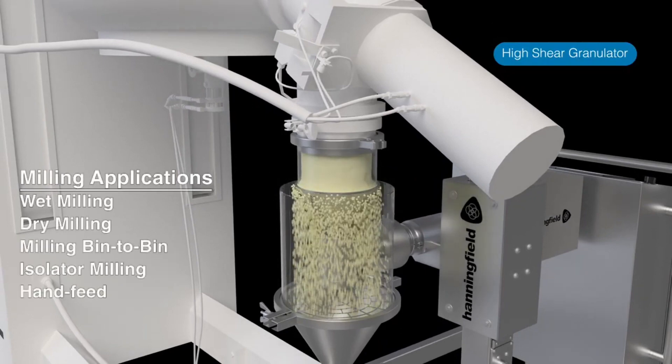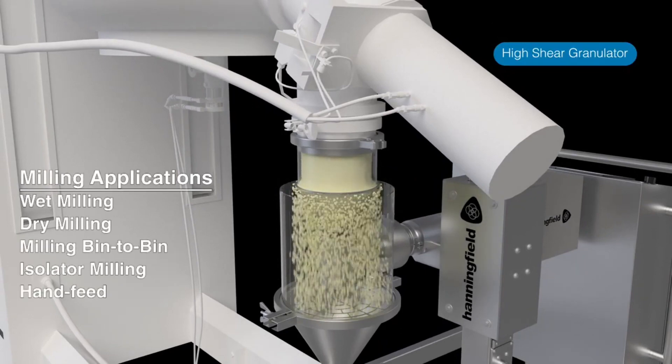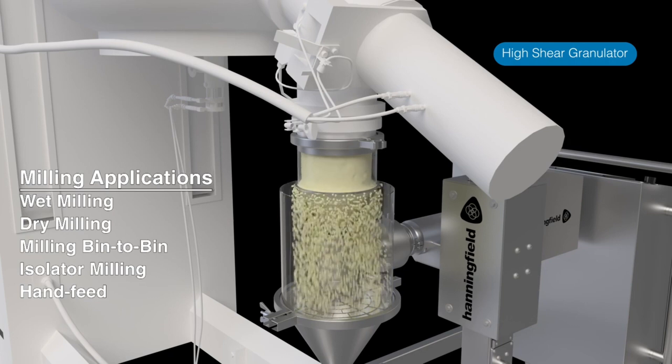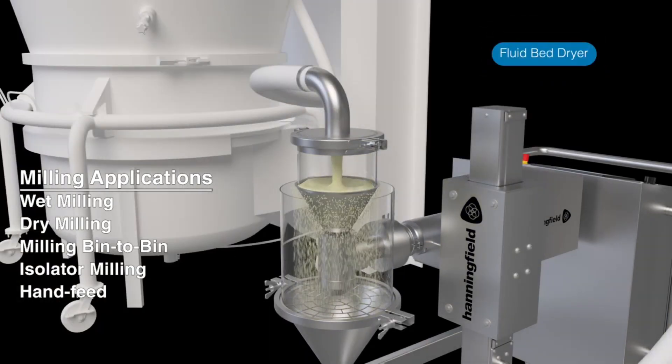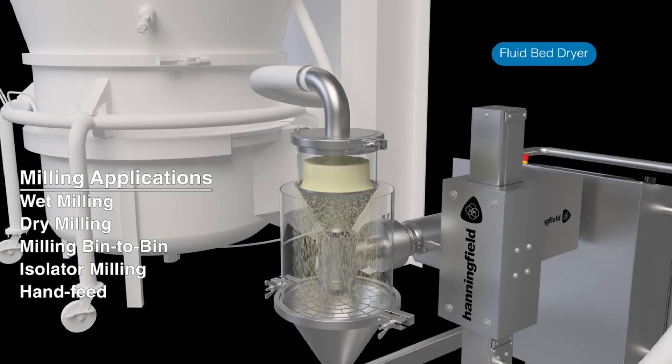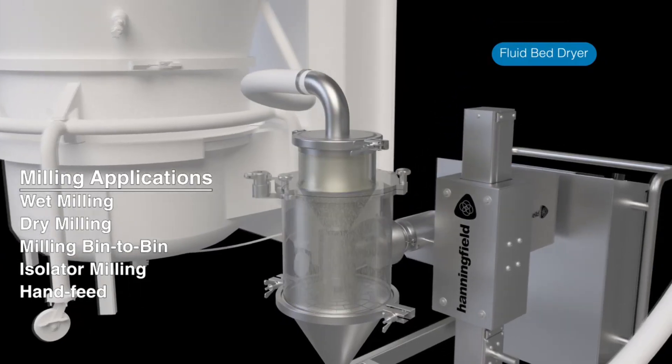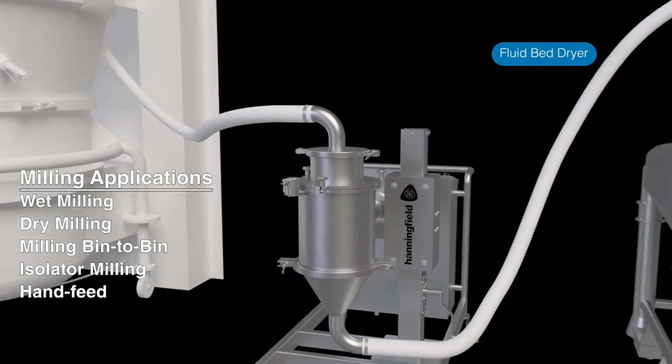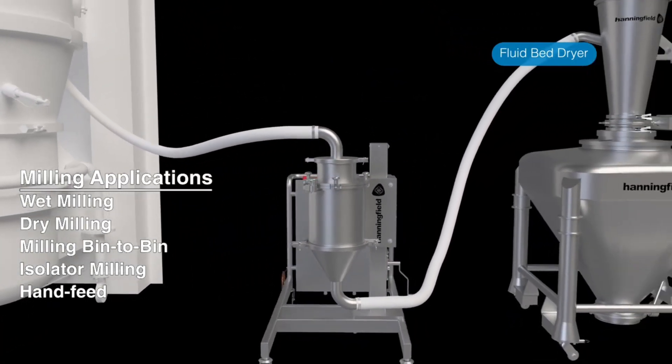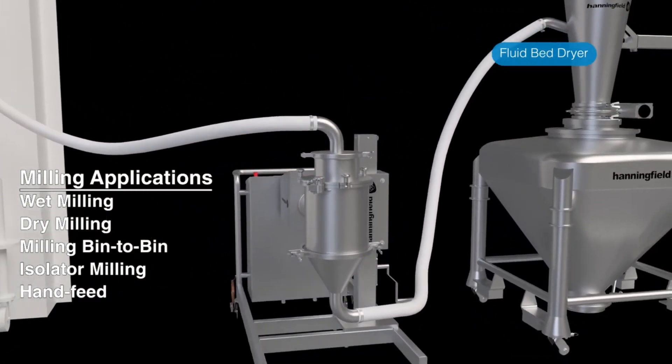Typical conical milling applications include wet milling from a granulator or high-shear mixer which creates a smaller, more uniform particle for faster drying in a dryer. And after drying, where a conical mill is used again to de-lump material and provide a desirable particle size distribution for downstream compression or encapsulation.